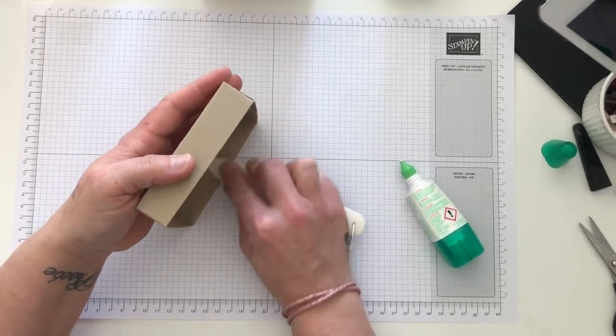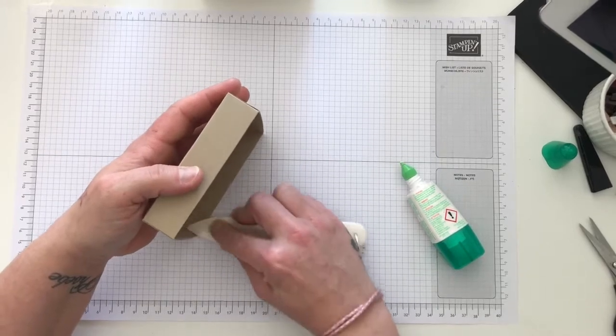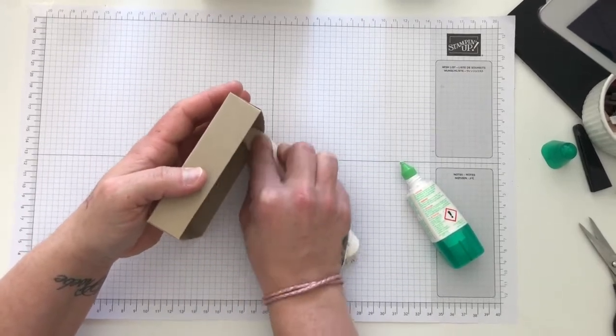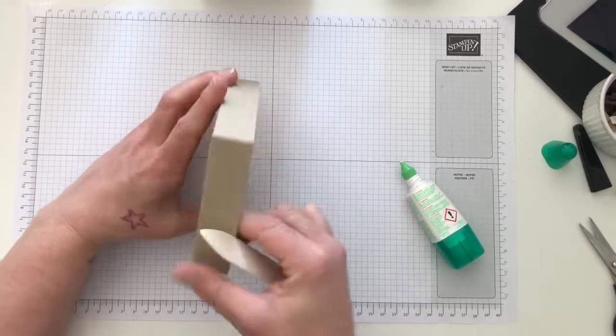And again the same. So just giving it a good bone folder down, making sure that glue squidges on every little thing. And again, I'm just going to just double check all these other sides.